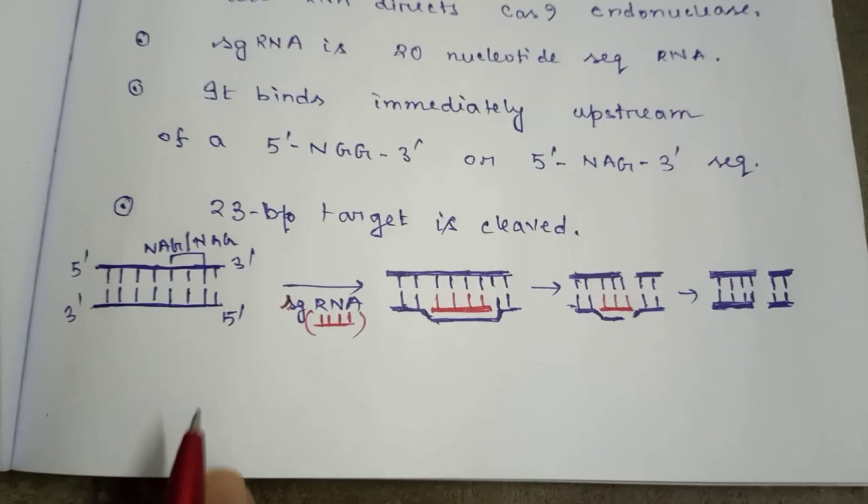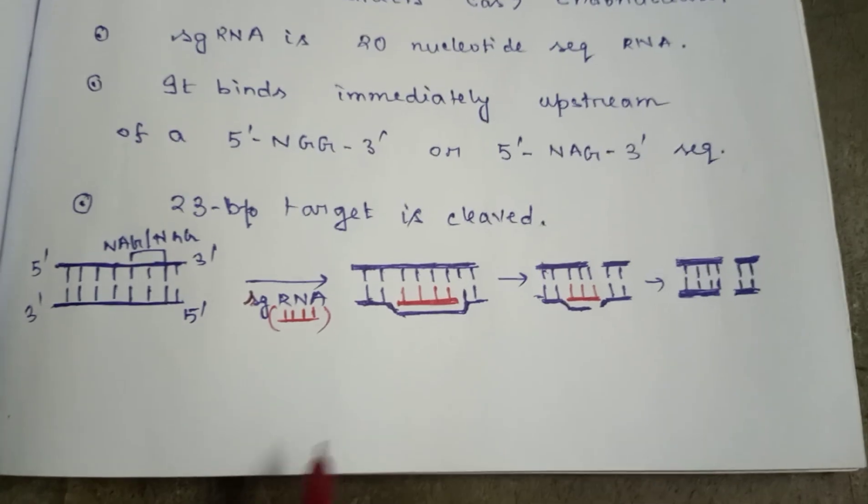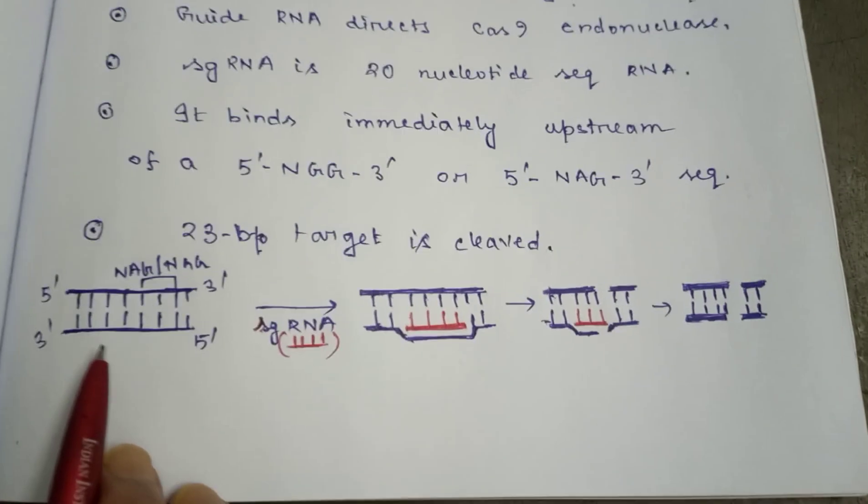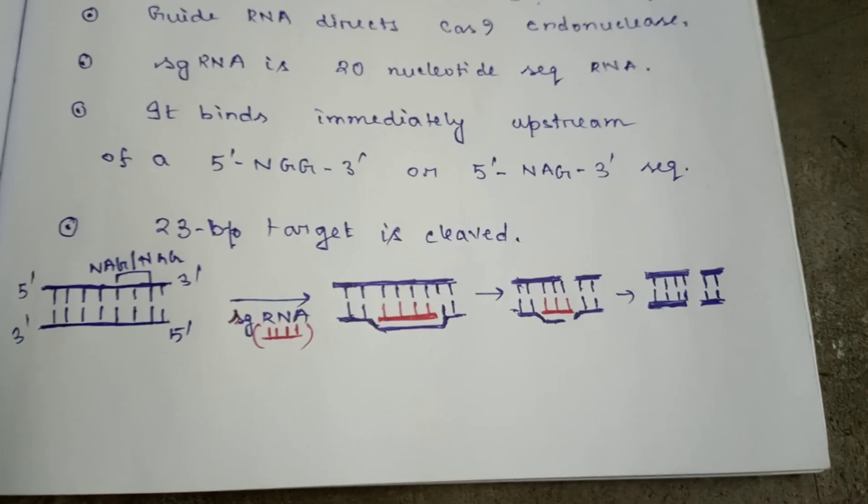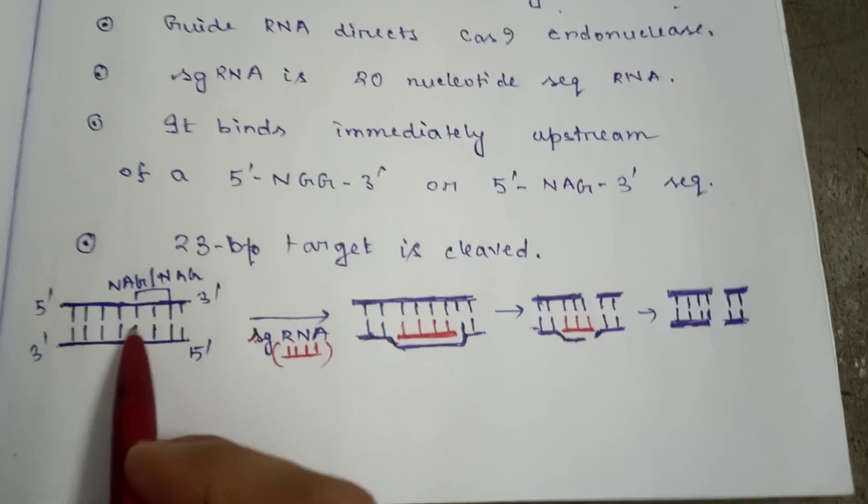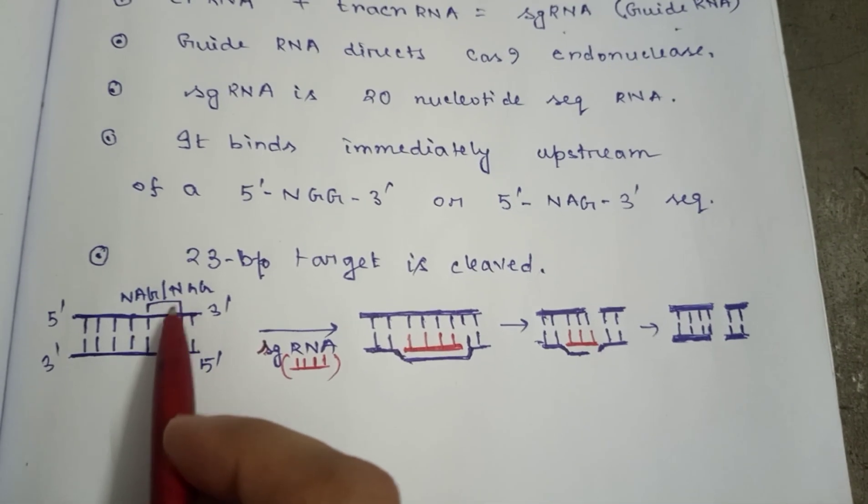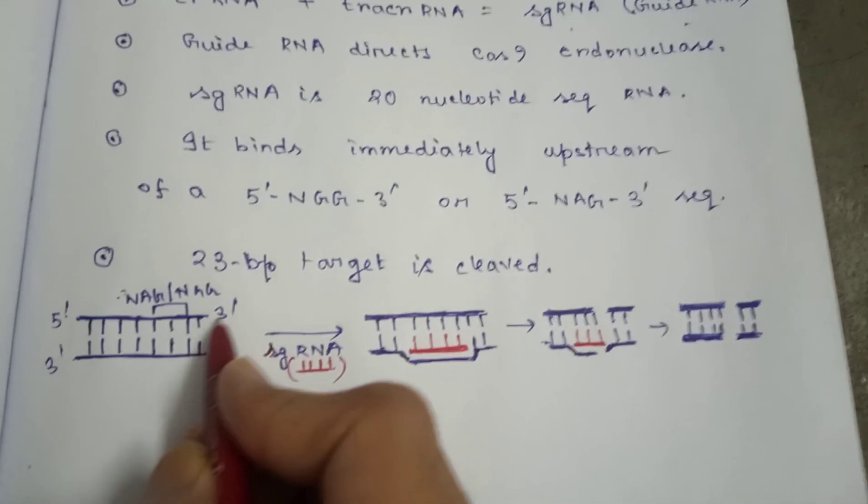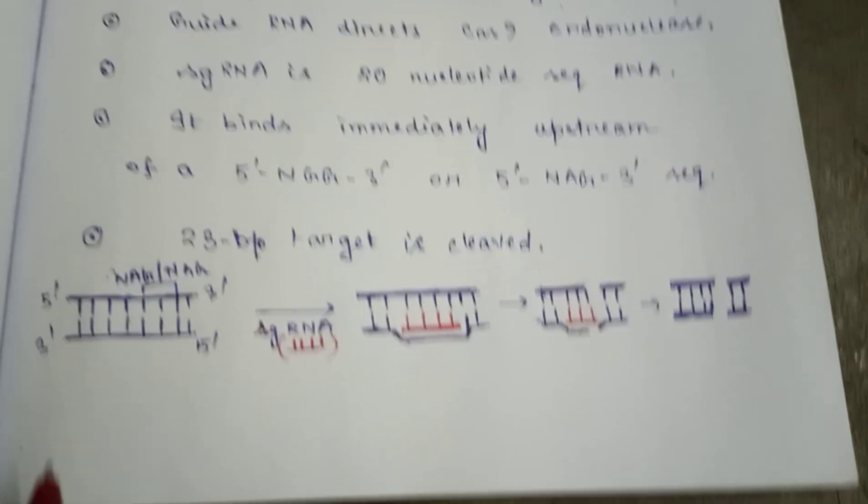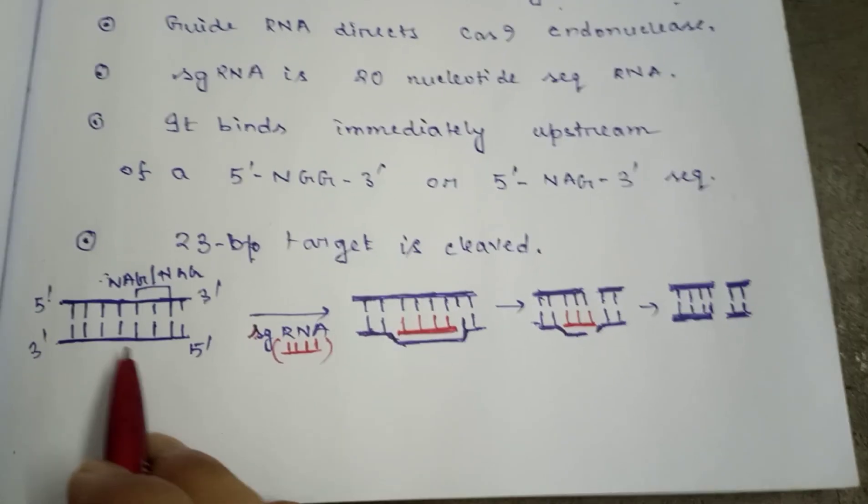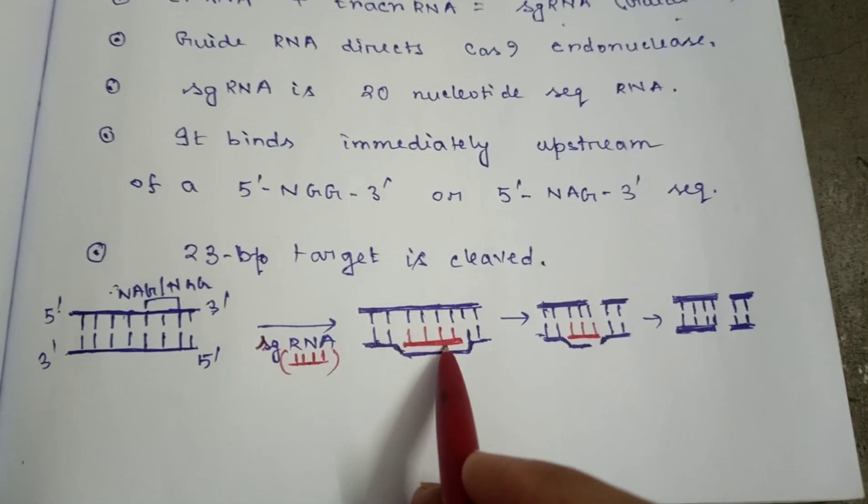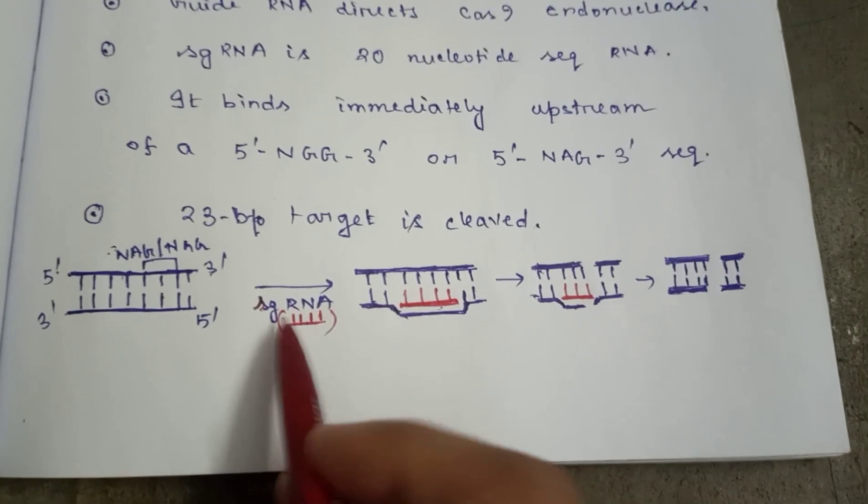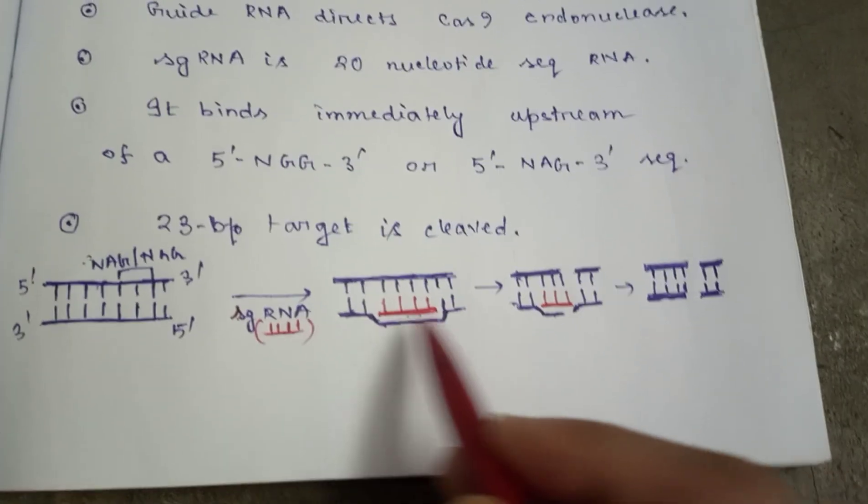Here I have tried to draw a simple diagram to make you understand. This is the DNA. Here is the NAG or NGG part, so this is 5' prime and this is 3' prime. This is the viral DNA, so the sgRNA will attach to this part.